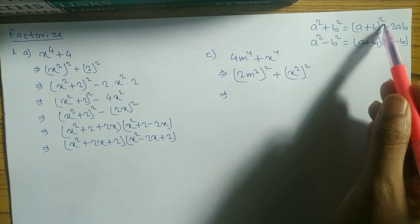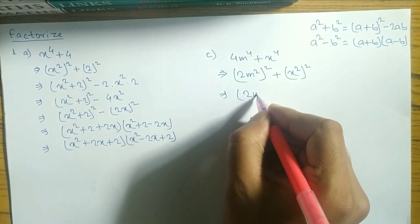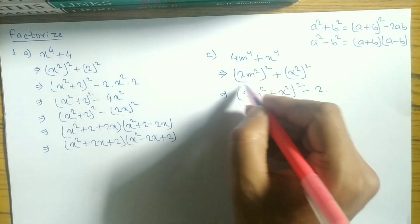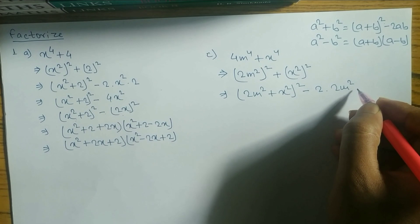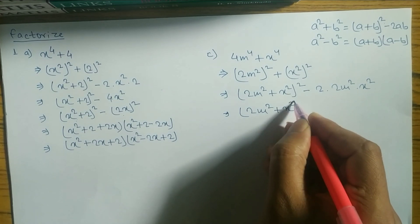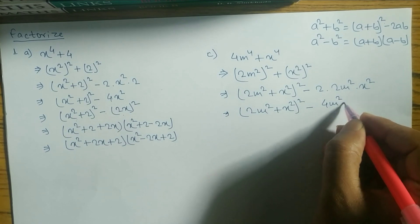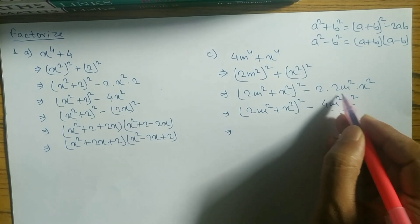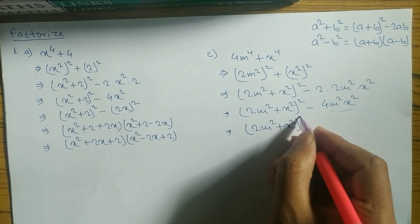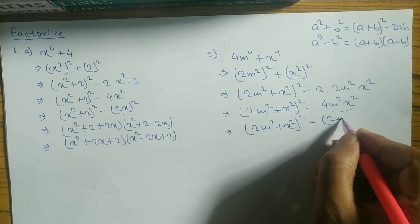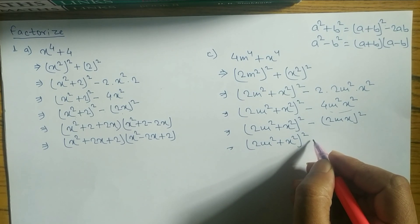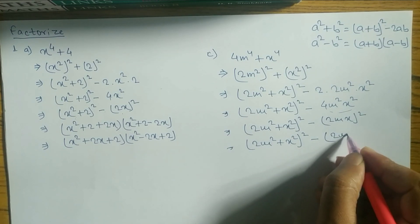Now we apply the formula for a² + b²: (a + b)² − 2ab. Here a = 2m² and b = x². So we write: (2m² + x²)² − 2 × 2m² × x² = (2m² + x²)² − 4m²x². Now we convert 4m²x² into a whole square: (2m² + x²)² − (2mx)².